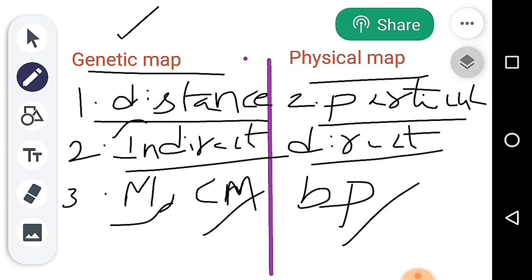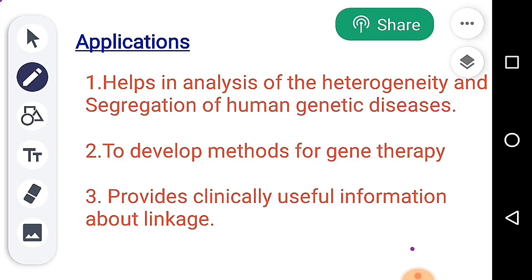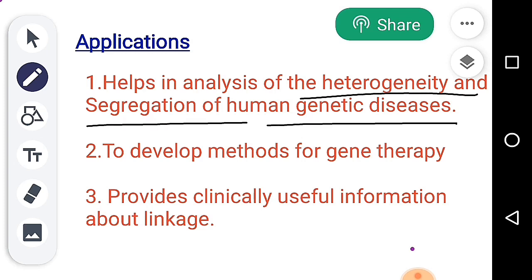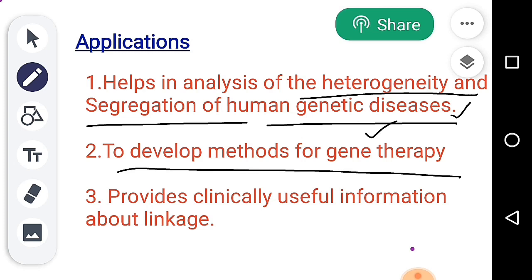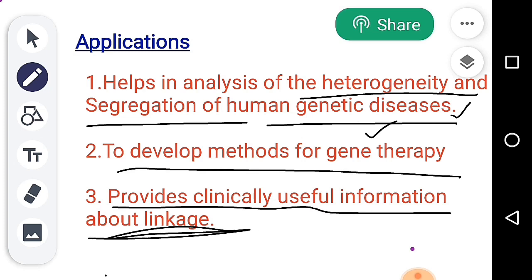The advantages of Gene Mapping include: it helps in the analysis of the heterogeneity and segregation of human genetic diseases. It is used to develop methods for gene therapy — using gene mapping, we can find the exact gene causing a disease and then replace or change it. Gene mapping also provides very useful information about linkages and gene mapping applications.